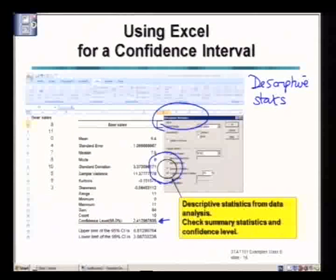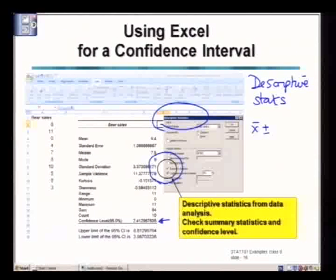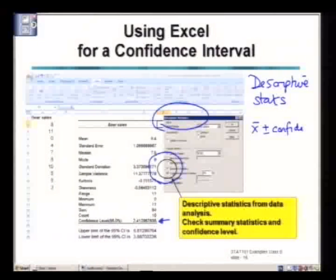Now this confidence level represents what's called the margin of error. It's the bit that's plus and minus from the mean. So the mean value plus and minus the confidence level, called confidence level in Excel. So the confidence level, which is the same as the margin of error.